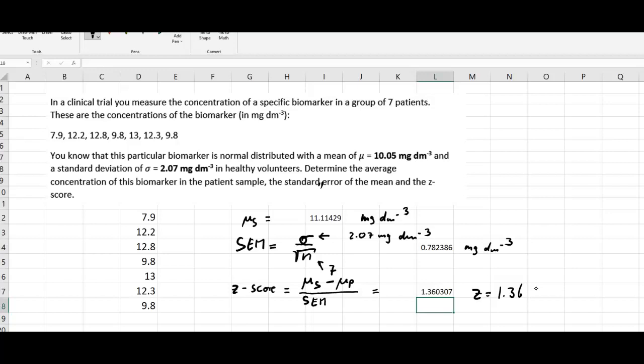So basically that means if we look at a normal distribution like that - that is our normal distribution which is around 10.05 distributed - the value for our sample mean, 11.11, would be here. That's the sample mean.